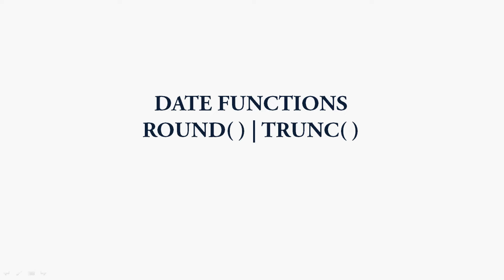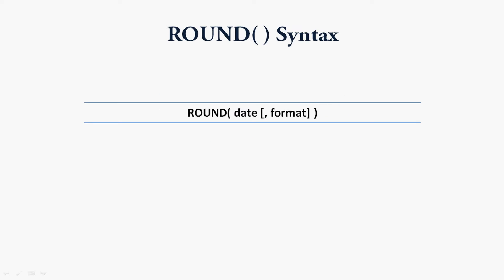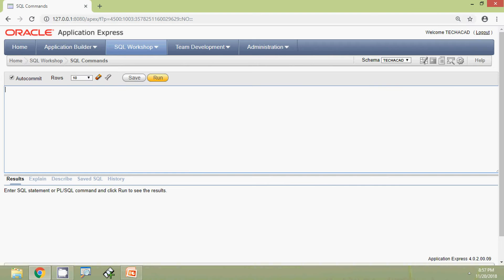First we will see the date function ROUND. This function returns a date rounded as per the user's requirements. The syntax is: ROUND(date, format), where the format parameter is optional. We will see some examples to make this more clear.